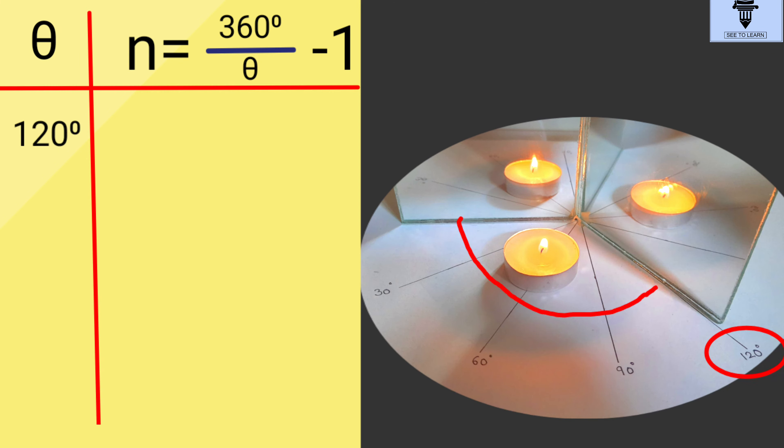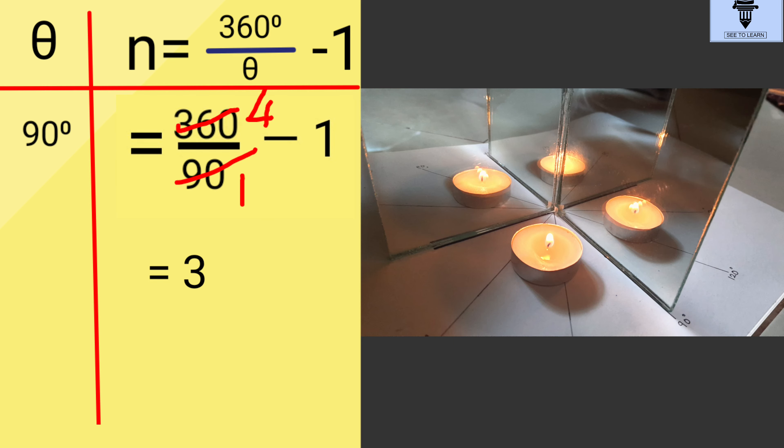If theta is equal to 120 degrees, then we get two images. For theta 90 degrees, the images are three.